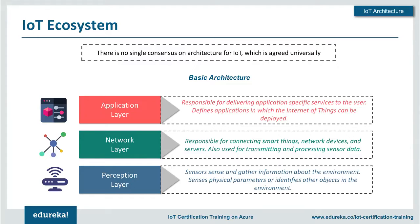In the IoT ecosystem, there is no single consensus or universally agreed architectural design, because each organization and user has different requirements. Looking at a simple three-layer architecture: the perception layer gathers information from the environment via sensors, the network layer transfers that data to the next layer, and the application layer delivers this information to the end user.